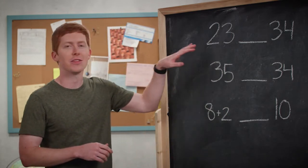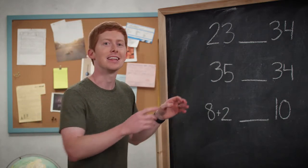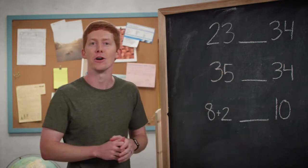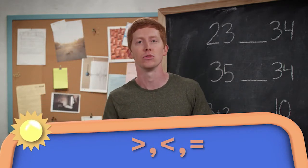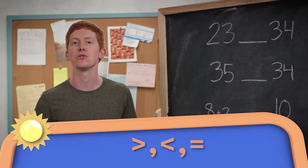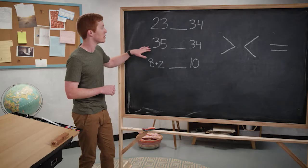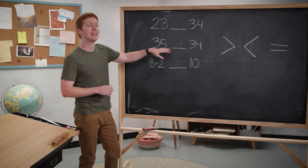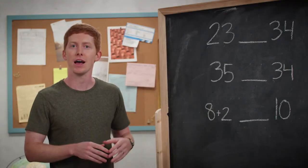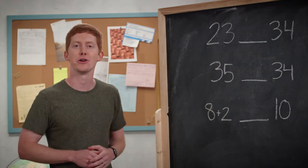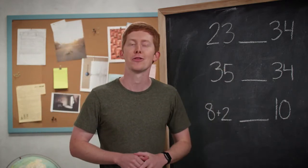When we talk about the symbols, 23 is less than 34. We have symbols like greater than, less than, and equal to — those are great symbols to compare numbers together. Let's do another one: 35 and 34. These numbers are really close, but we know that 35 is one more than 34. So 35 is greater than 34.